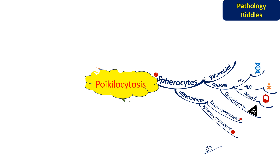We also need to know how to differentiate microspherocytes and spheroechinocytes from spherocytes. Microspherocytes are smaller and occur due to red cell fragmentation — they form because of removal of most of the membrane by splenic or other macrophages. Spheroechinocytes are artifacts formed when blood is allowed to stand before spreading on a slide, and are also seen in patients transfused with stored blood.